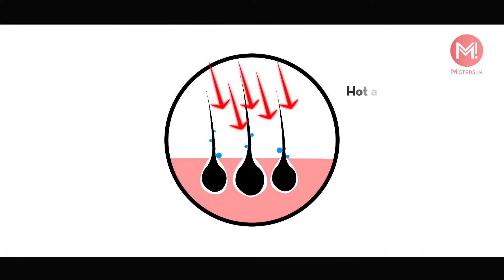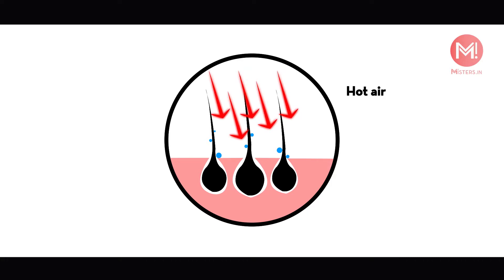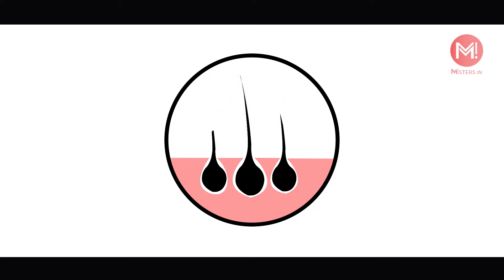Another reason for hair loss is that when we dry our hair in heat mode, the surface of the hair reaches its boiling point. And because of this, the hair gets damaged. As this damage continues to happen, the hair becomes weaker and hair loss occurs due to breakage.